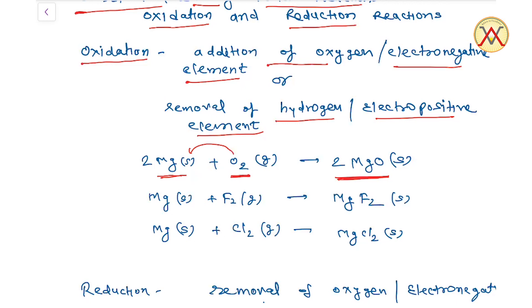Second example है Addition of Electro-Negative Element। Fluorine एक Electro-Negative Element है, तो Magnesium के साथ react करने पर बना MgF₂। इसी तरह Chlorine भी एक Electro-Negative Element है, Magnesium के साथ Addition से बना MgCl₂।